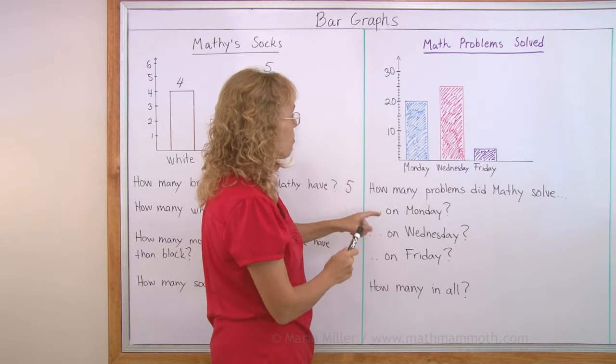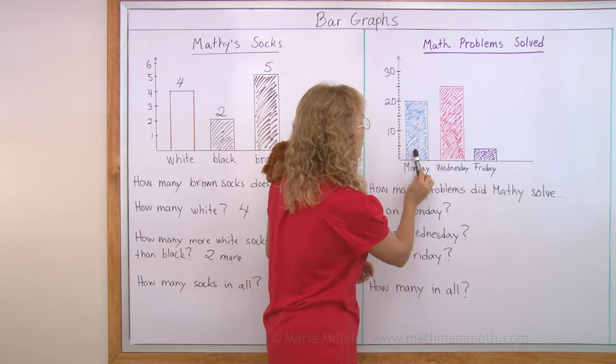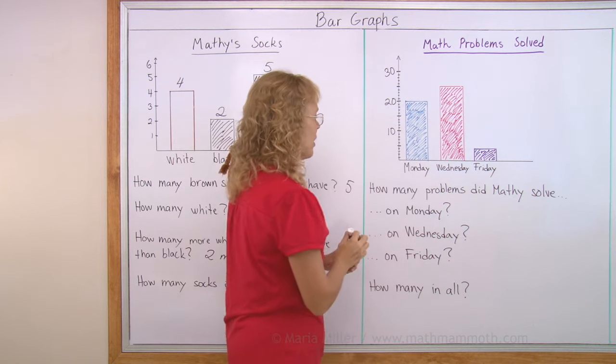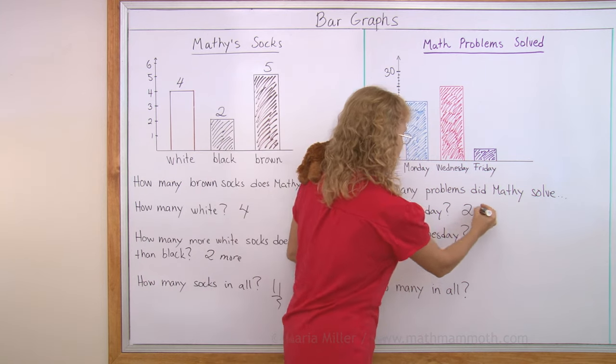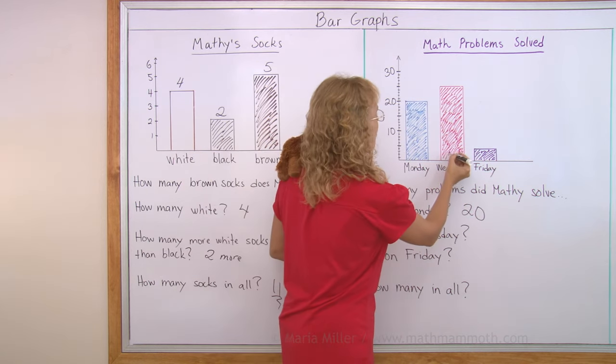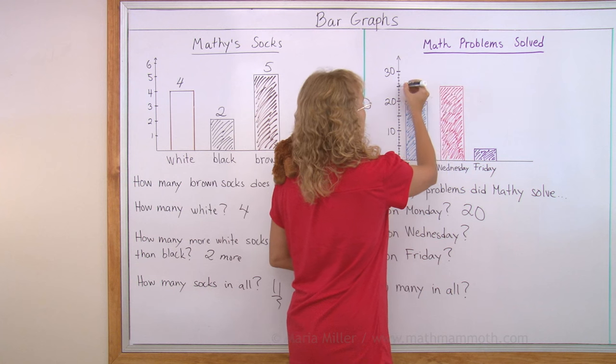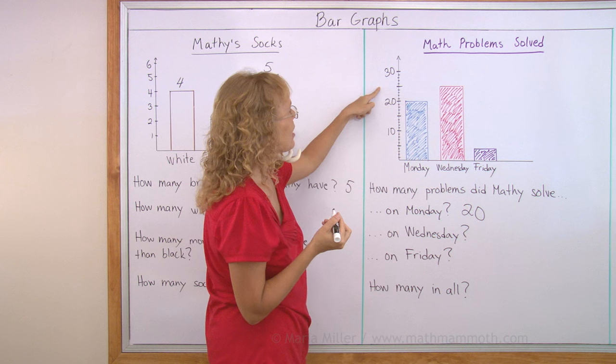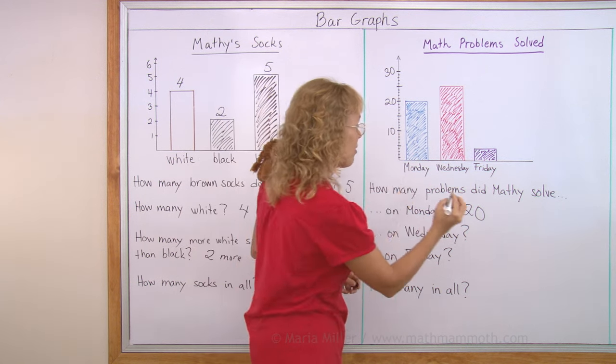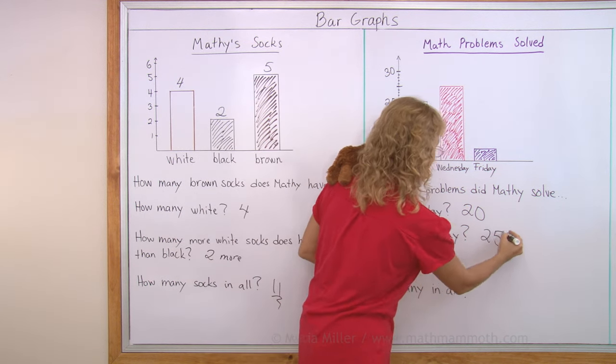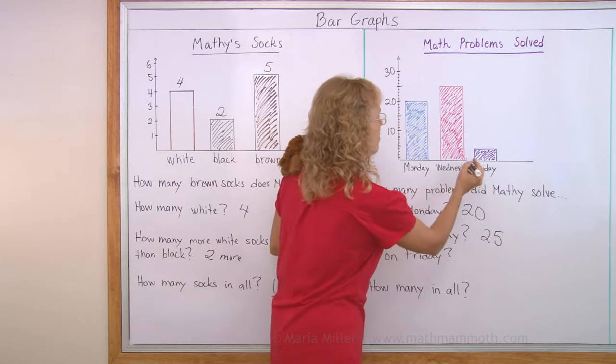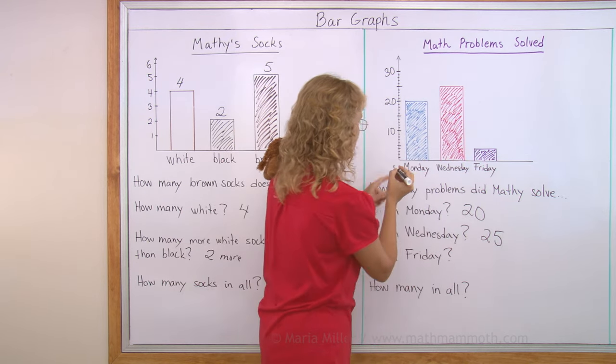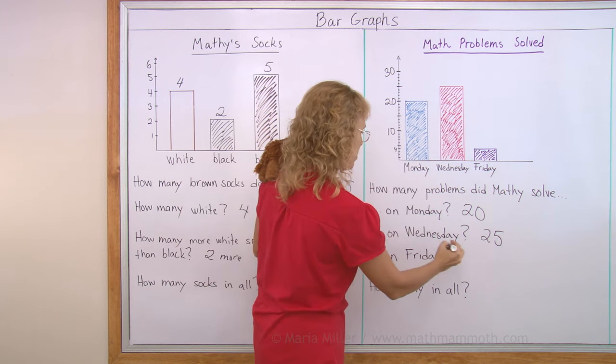How many problems did Matthew solve on Monday? Go all the way up to the top of this bar or top of this rectangle. Twenty problems. And on Wednesday, go all the way up and then over here. This many. What number is it though? It's midway between twenty and thirty. It is twenty-five. And then on Friday, this many. One, two, three, four. Just four problems.